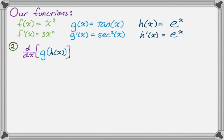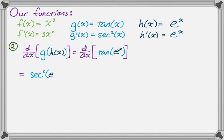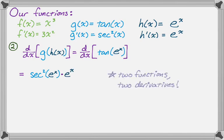Next, the derivative of g(h(x)), which is the derivative of tan(eˣ). The derivative of tangent of something is secant squared of that thing, then by the chain rule times the derivative of that thing. The derivative of eˣ is eˣ, so we get sec²(eˣ)·eˣ. Again, two functions composed, two derivatives taken.